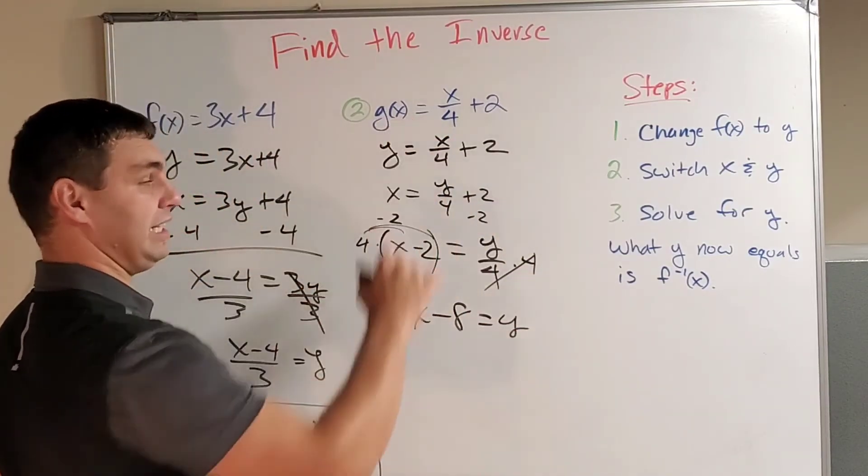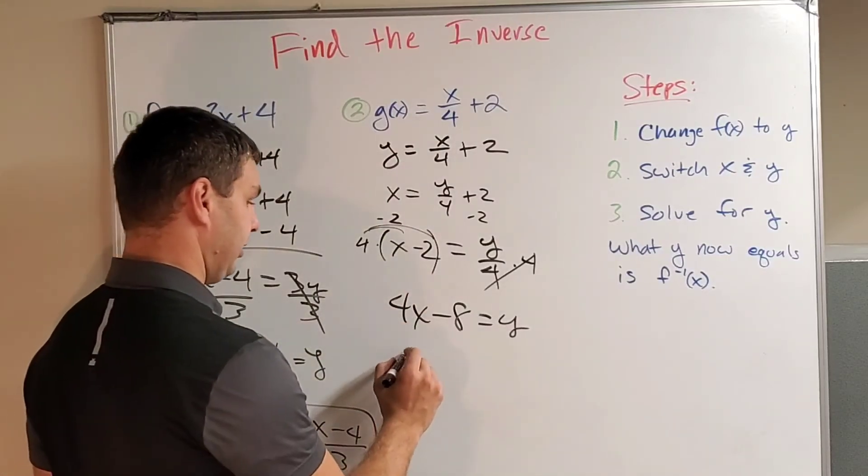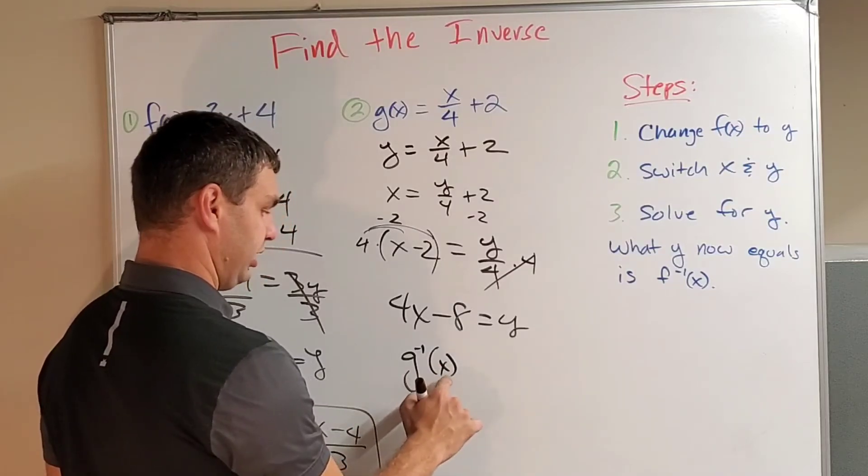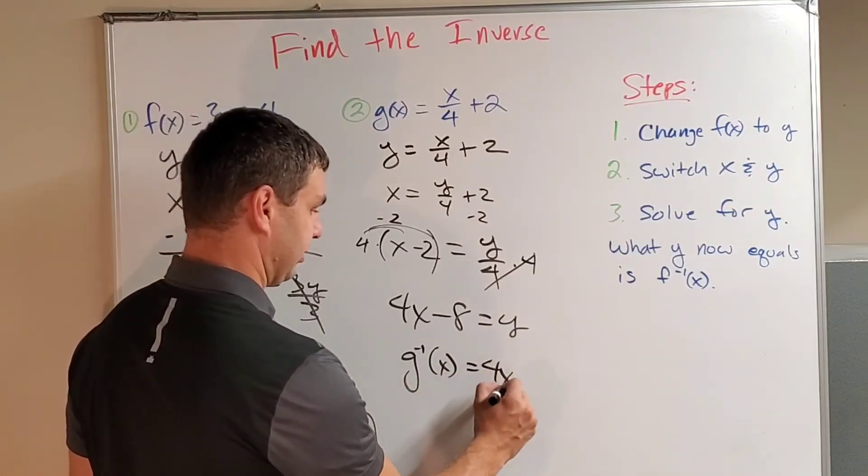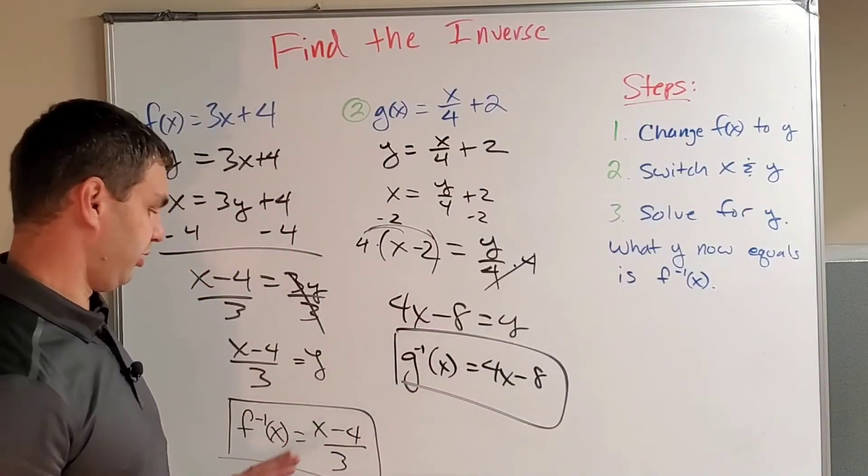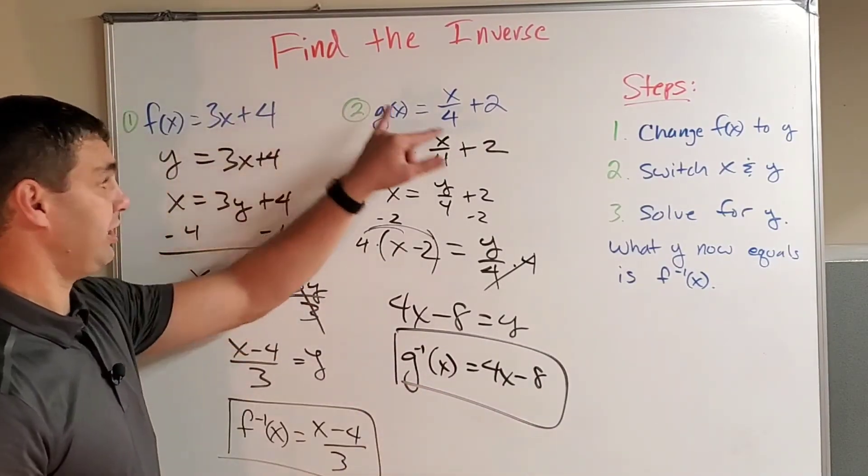But again, not y. Now it's the inverse of g. So we write that with g, a little negative 1. That means inverse. The inverse of g of x is 4x minus 8. So we have successfully found the inverse of both f of x and g of x for these two functions.